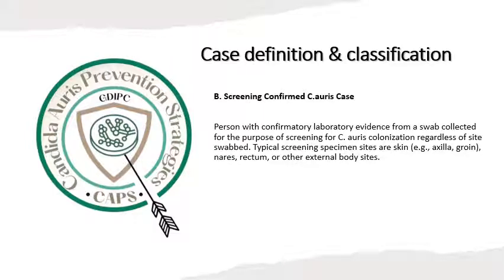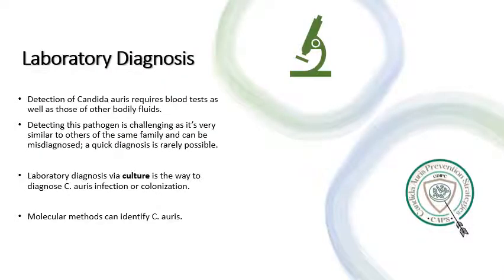B: Screening confirmed Candida Auris case, which is a person with confirmatory laboratory evidence from a swab collected for the purpose of screening for Candida Auris colonization, regardless of site swabbed. Typically, screening specimen sites are the skin such as axilla, groin, nose, rectum, or other external body sites.